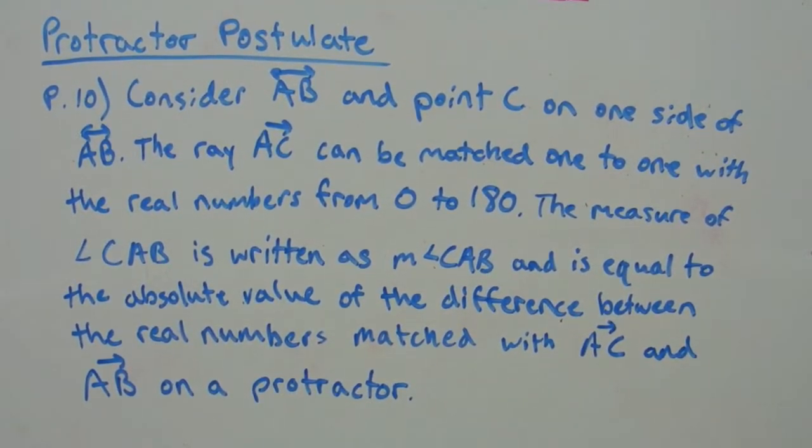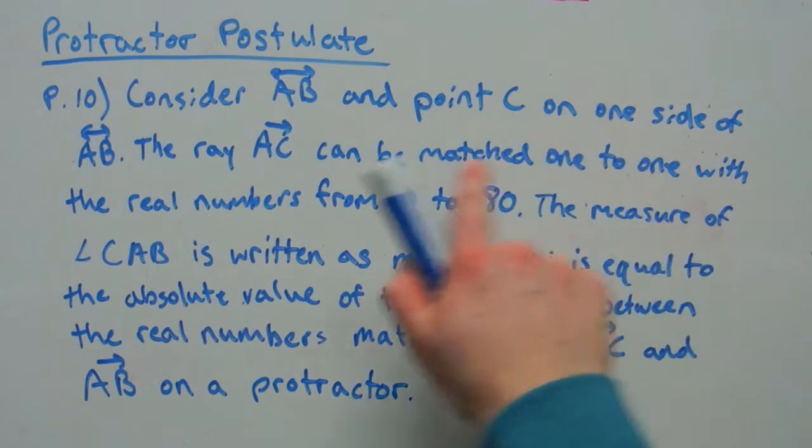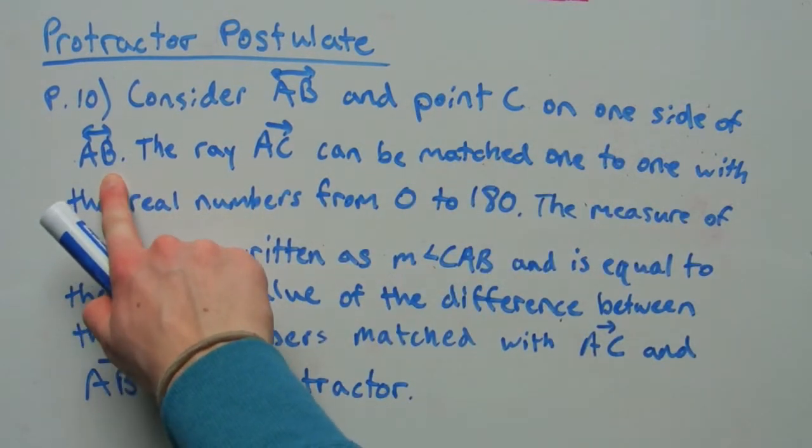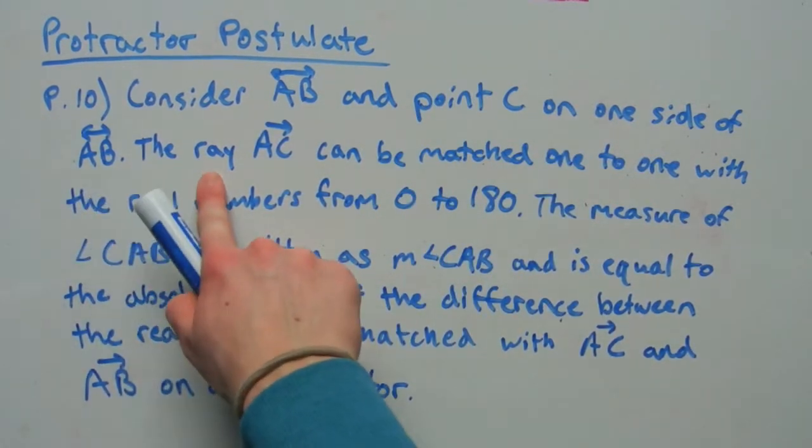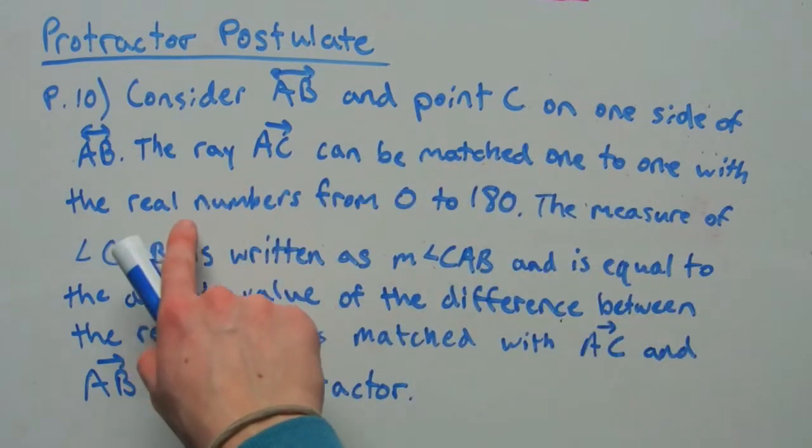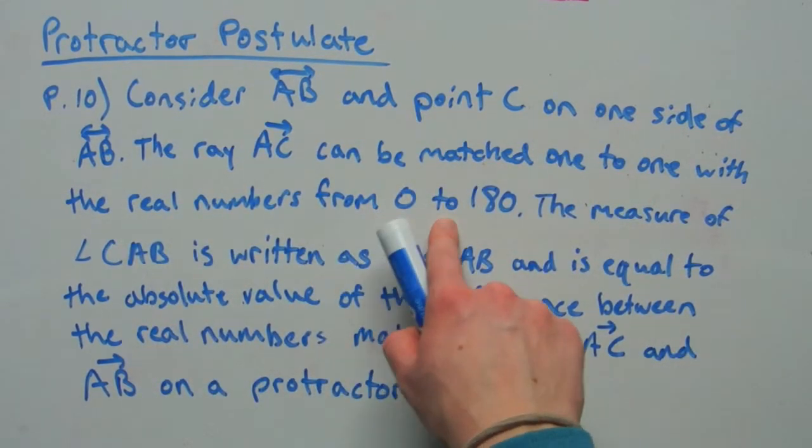The protractor postulate is P10. It says consider a line AB and a point C on one side of that line AB. The ray AC can be matched one to one with the real numbers from zero to 180.